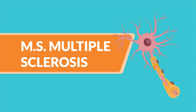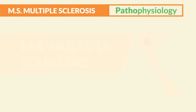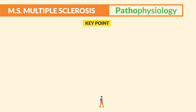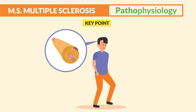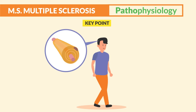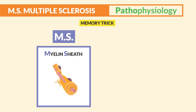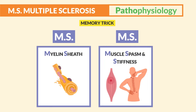M.S. — Multiple Sclerosis is an autoimmune disease where the body attacks the myelin sheaths, those sheets of fatty tissue around the nerve cells which help the body move. The memory trick for M.S.: just think M.S. — Myelin Sheath destruction.